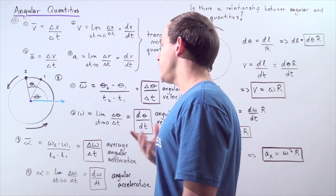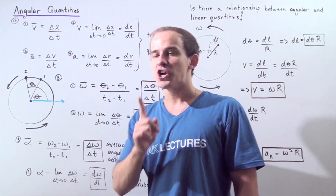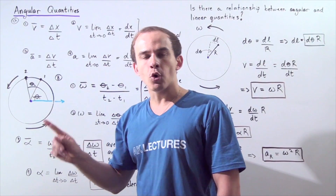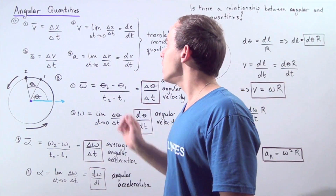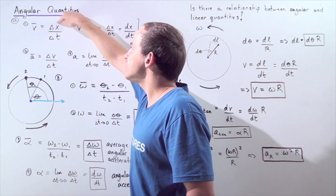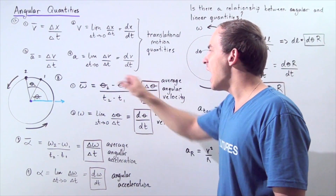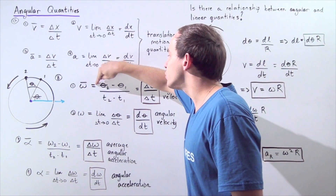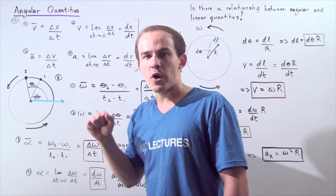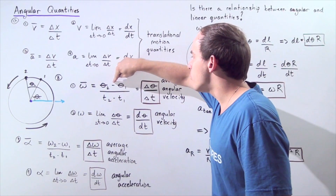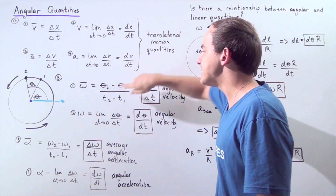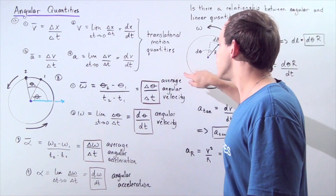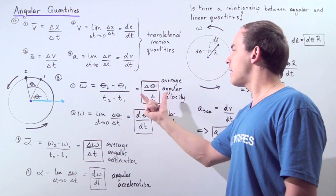The bar over omega simply means we're talking about the average. In the same way that average linear velocity was the change in displacement divided by change in time, our average angular velocity is the difference between our two angles — theta two minus theta one — divided by t two minus t one. This is the formula for average angular velocity.